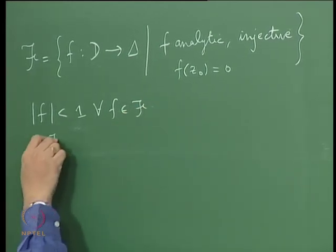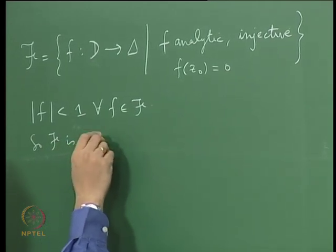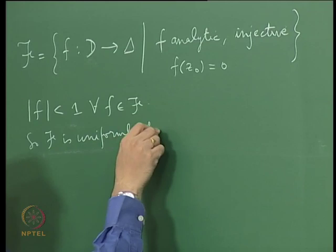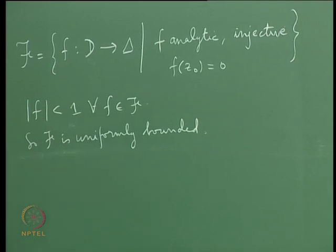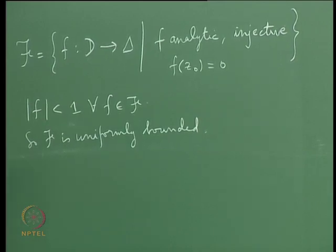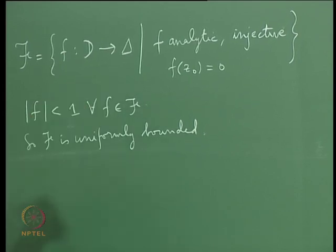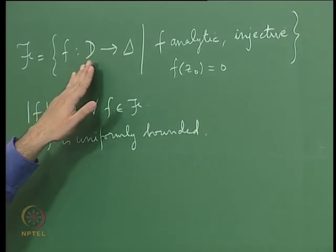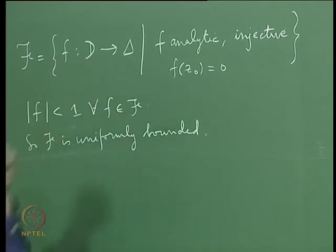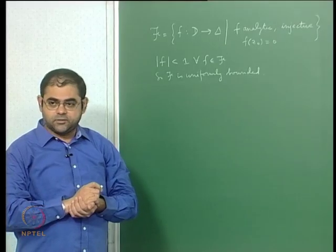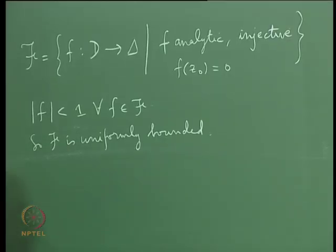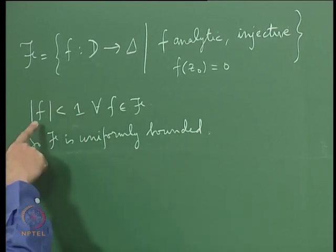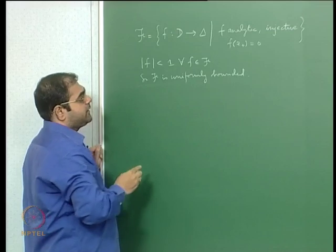The fact that each f takes values in the unit disc means that |f| is always strictly less than 1 for all f in the family. So this tells you that the family is uniformly bounded. Script F is uniformly bounded. And we have already seen that this family is non-empty, because you can always find a holomorphic isomorphism of D onto a sub-domain of the unit disc — that was the first step of the Riemann mapping theorem.